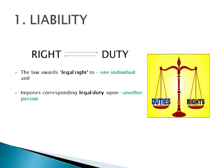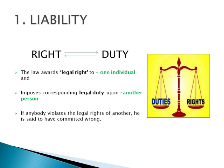For example, I have the right to life and there is a corresponding duty on others to respect my life and not to cause any harm to me. If anybody violates the legal rights of another, he is said to have committed a wrong. And if there is a wrong, there is a liability. Thus, liability is the condition of the person who has committed a wrong.